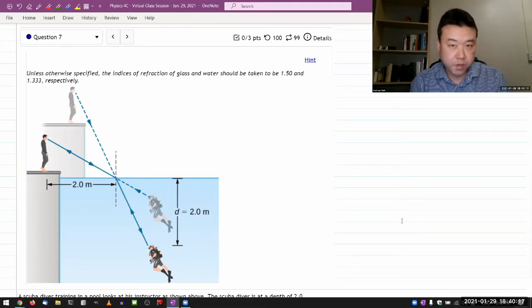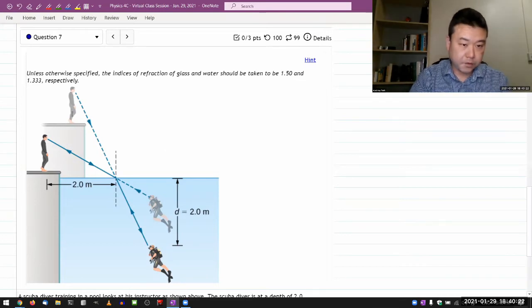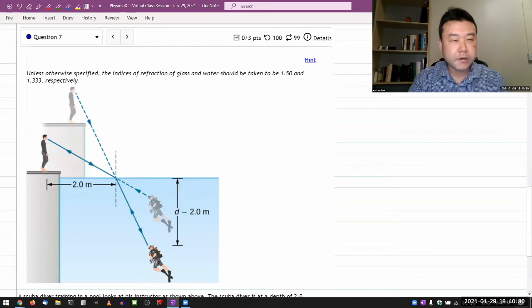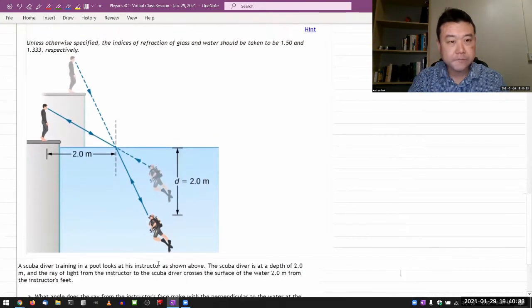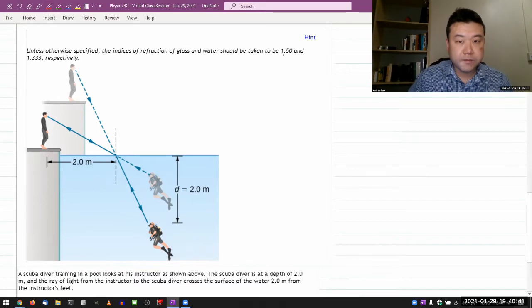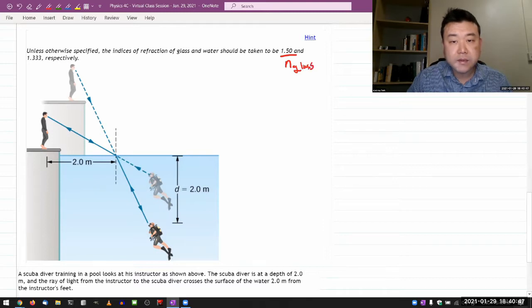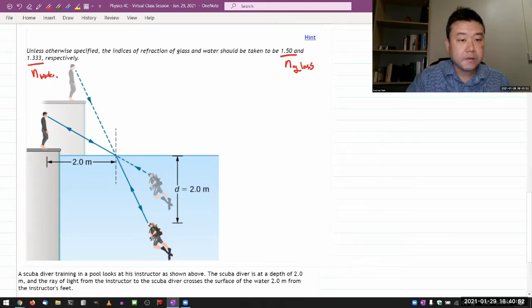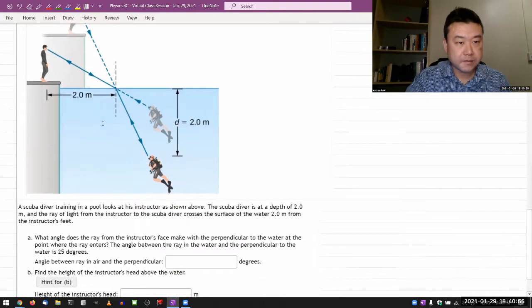So this is question seven in your problem set too. Let's see, I see the figure showing a person outside the water, someone inside the water, and I guess somewhere in the question it'll describe. I think I need these two numbers noted. This is the index of refraction of glass and this is the index of refraction of water. So that in mind, this is the question.